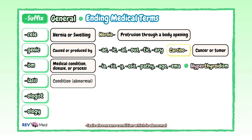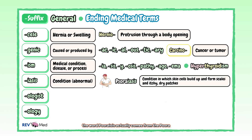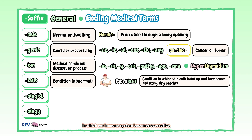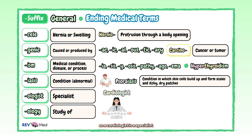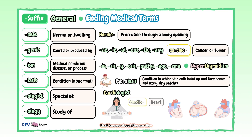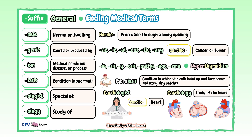"-Iasis" also means condition, which is abnormal. The word psoriasis actually comes from "psora" meaning itch, and "-iasis" for condition. Psoriasis is a chronic disease in which our immune system becomes overactive and causes skin cells to multiply too quickly. "-Ologist" and "-ology" are simple. "-Ologist" is the specialist in that particular area of study, and "-ology" is the study of. So a cardiologist is the specialist that knows about the cardio — the heart — and his field of study is cardiology, the study of the heart.